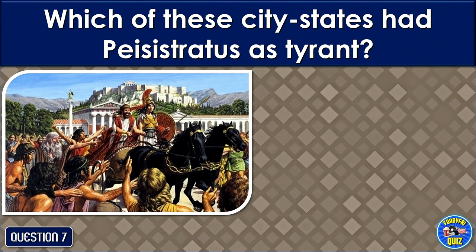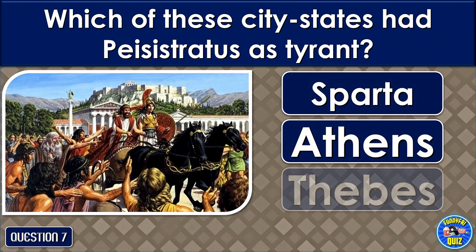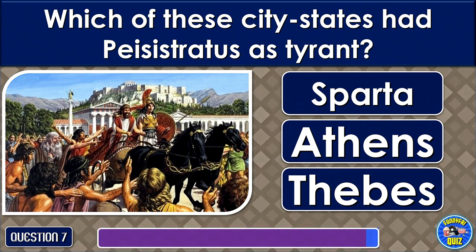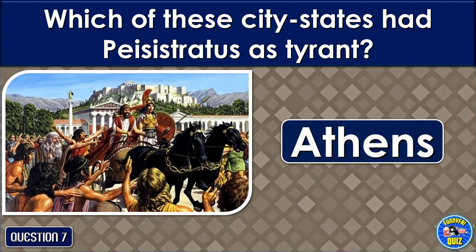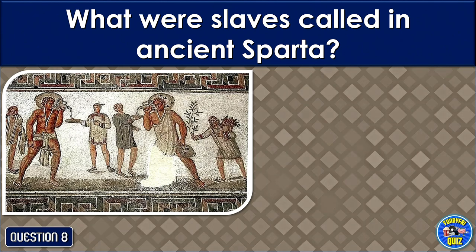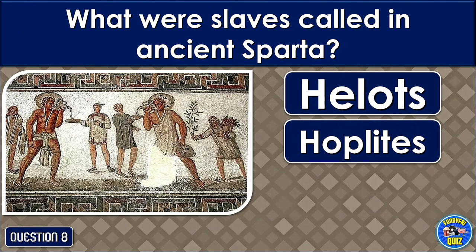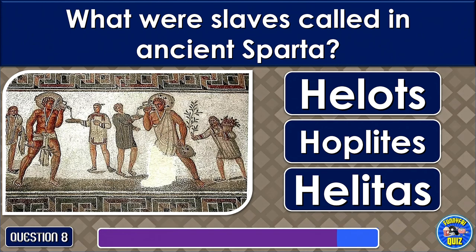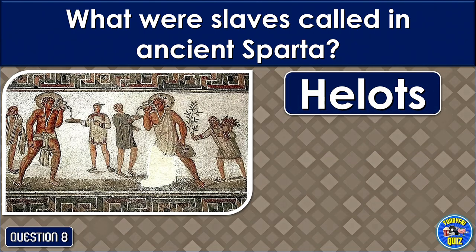Which of these city-states had Piscistratus as tyrant? Athens. What were slaves called in ancient Sparta? Helots.